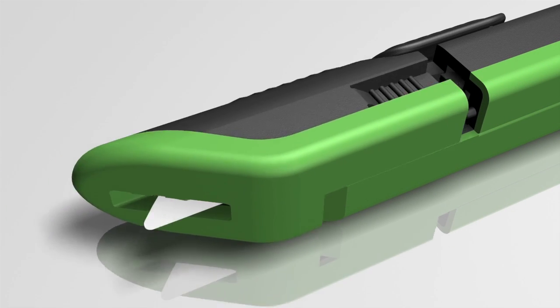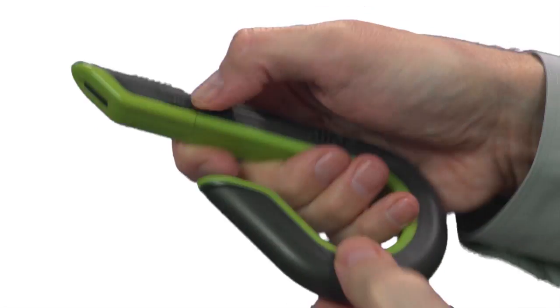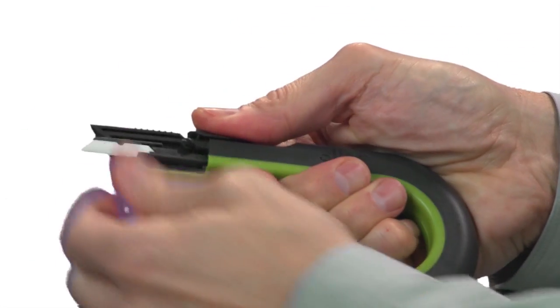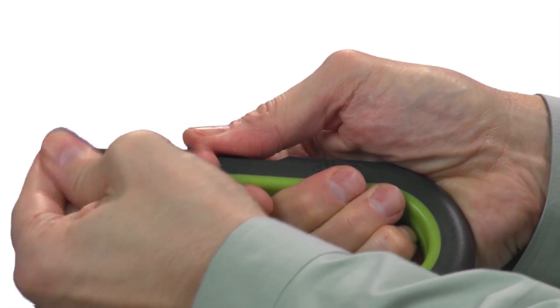Changing the blade on the Slice Box Cutter requires no tools. Simply remove the top cover, extend the slider button, and flip the blade to the other side.